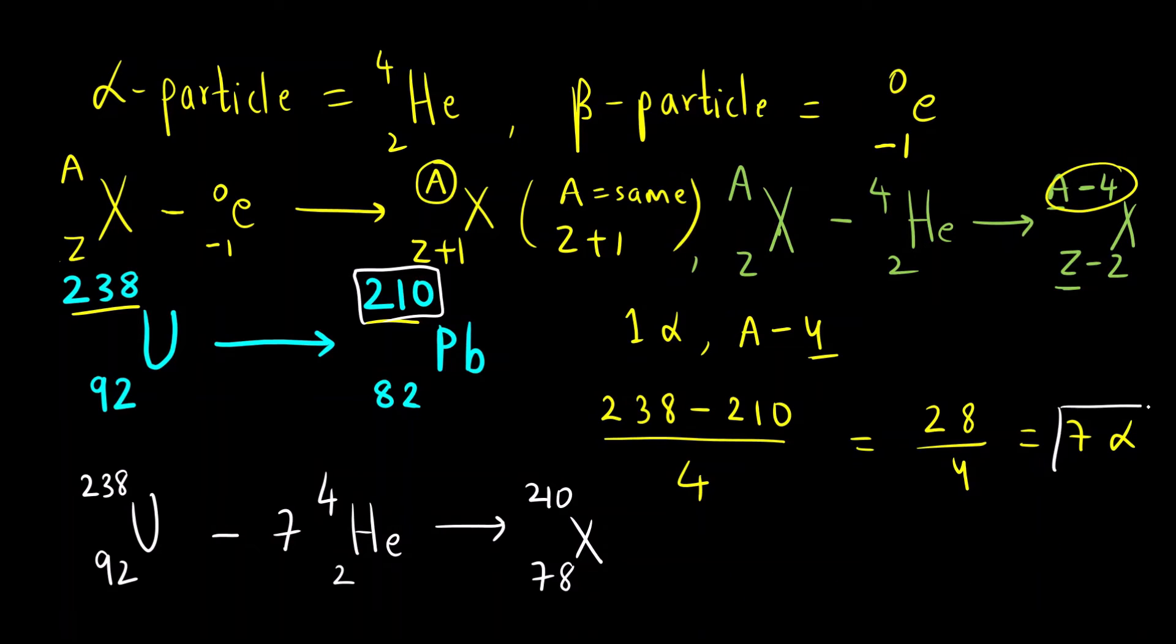This was for the alpha particle. Now we have to also find out the number of beta particles. For beta particle, you can see that only the atomic number increases by 1 unit. Here you can see what is the final element? We will write that lead 210 and atomic number is 82.